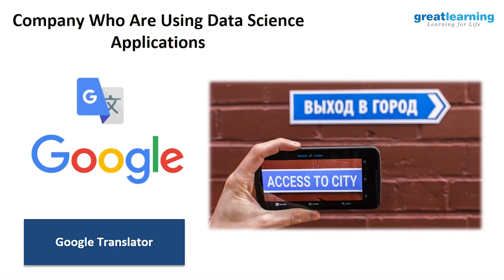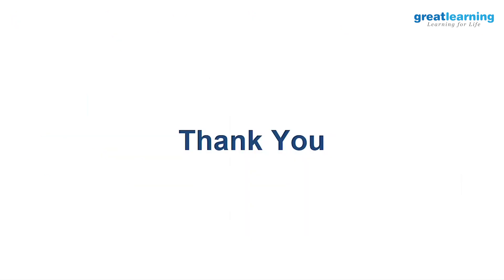Then there is Google Translate. If you don't know a language — say Chinese, Spanish, or French — and you want to understand what is written on a placard or sign, you can use Google Translate. It will translate that sentence or word into English or whatever language you prefer. This is how data science is controlling and helping our everyday lives.